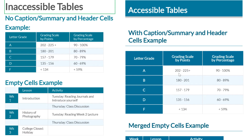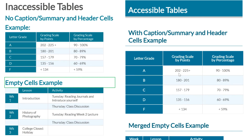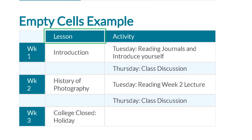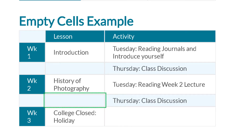Now let's visit another scenario of inaccessible tables — the 'empty cells' example. Many times what happens is data is displayed in a table but there's a lot of white space — many empty cells. For us using a screen reader, it's a hassle because we're traveling from cell to cell and it says: blank, blank, blank. For example, navigating this table: Activity, WK1, Introduction, Reading journals and introduce yourself — then blank, blank, blank. With a large table you'd be hearing blank, blank, blank, blank continuously.